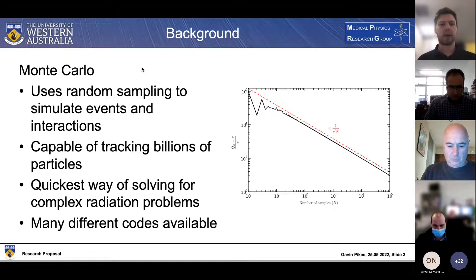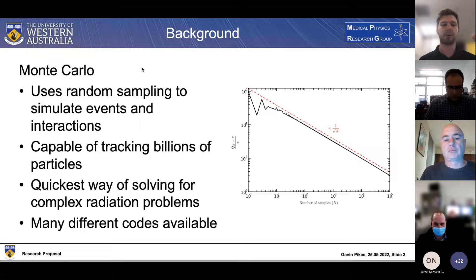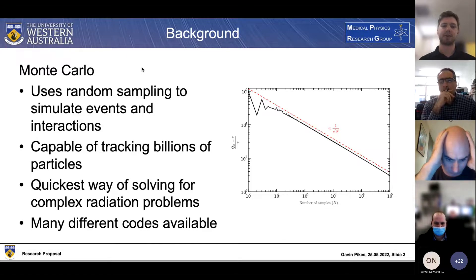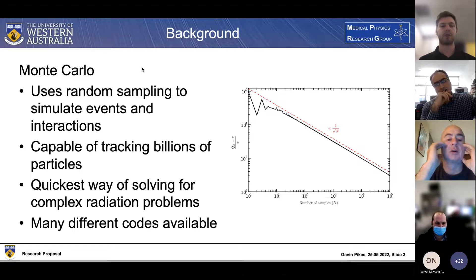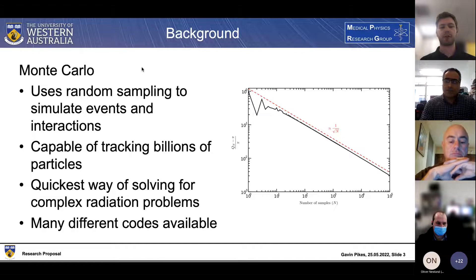The Monte Carlo method uses random sampling to simulate events and interactions. Rather than trying to solve multi-dimensional integral differential equations, which are quite complex, we instead use random probability calculations to provide a numerical answer to a deterministic problem. This is ideally suited for radiation physics where we're dealing with stochastic motion of particles. Monte Carlo simulation is also capable of tracking billions of particles at a time, making it ideally suitable for radiation physics.